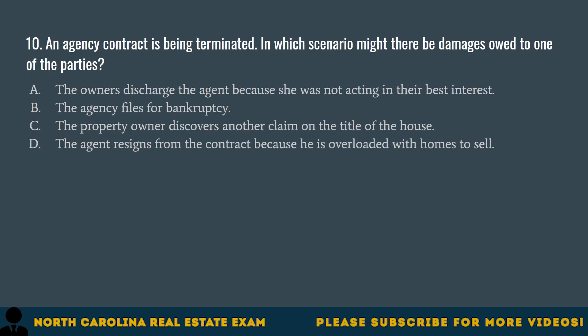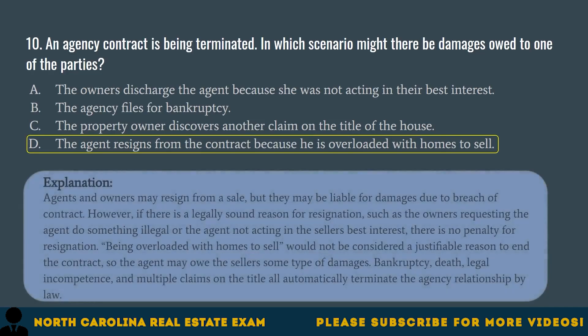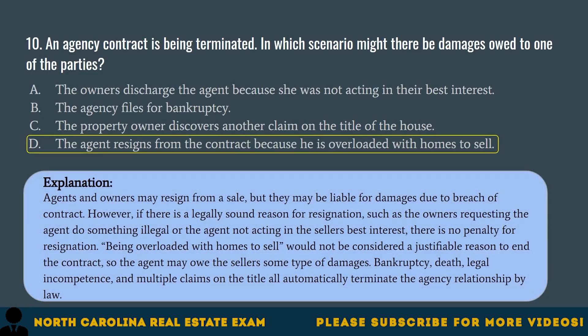Question 10. An agency contract is being terminated. In which scenario might there be damages owed to one of the parties? A. The owners discharged the agent because she was not acting in their best interest. B. The agency files for bankruptcy. C. The property owner discovers another claim on the title of the house. D. The agent resigns from the contract because he is overloaded with homes to sell. The correct answer is D. Agents and owners may resign from a sale, but they may be liable for damages due to breach of contract. However, if there is a legally sound reason for resignation, such as the owners requesting the agent do something illegal or the agent not acting in the seller's best interest, there is no penalty. Being overloaded with homes to sell would not be considered a justifiable reason to end the contract, so the agent may owe the seller some type of damages. Bankruptcy, death, legal incompetence, and multiple claims on the title all automatically terminate the agency relationship by law.